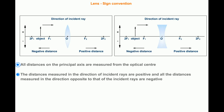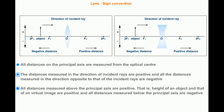Those distances are negative. Now observe the object placed above the principal axis. All the distances measured above the principal axis are positive — that is, the height of an object and that of a virtual image are positive. And all distances measured below the principal axis are negative. Observe all the directions and all the sign conventions.